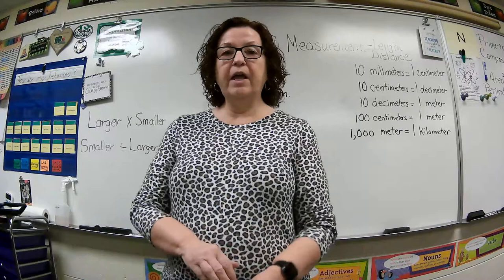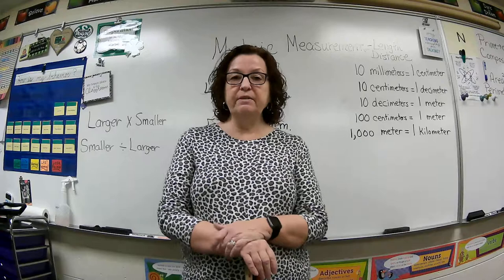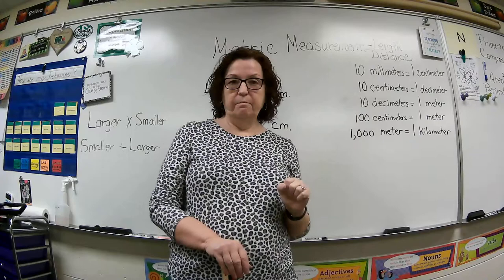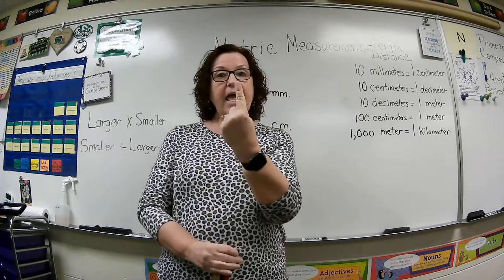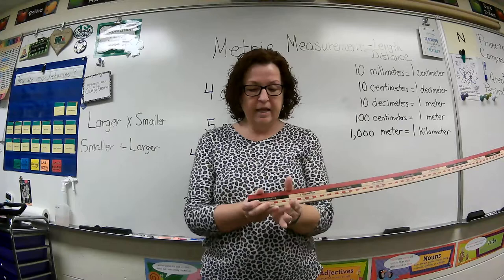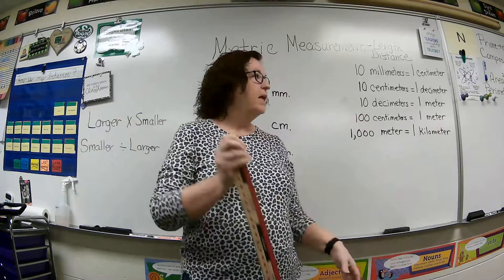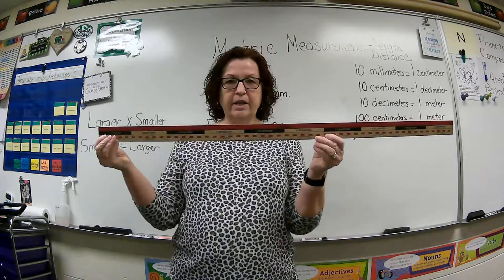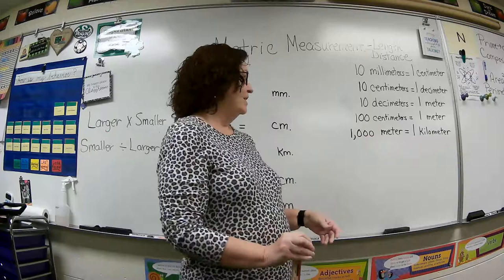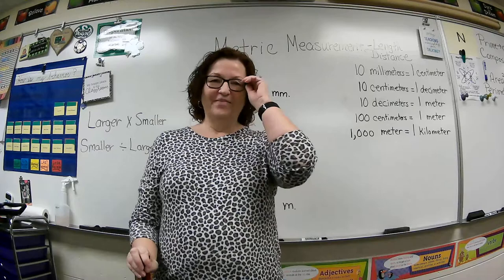I have a chart up here that you'll probably want to get your math notebook out and write down so you'll know the measurements and what they're equal to. Here we have: 10 millimeters make one centimeter — remember one centimeter is about the width of your finger, so 10 millimeters fit into that. Then 10 centimeters equal one decimeter. Then 10 decimeters equal one meter, so we have 100 centimeters in a meter. And then 1,000 meters make up one kilometer. So that's our metric system.